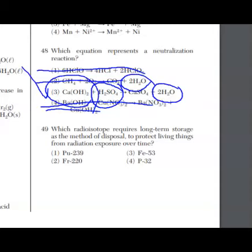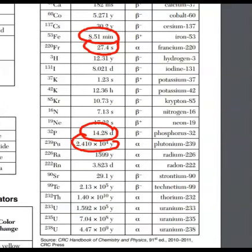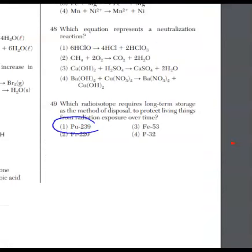For 49, which radioisotope requires long-term storage as a method of disposal to protect living things from radiation exposure over time? Another way to rephrase this is which one of these four radioisotopes has a long half-life. We don't have to guess here. All we need to do is go to the reference tables and find the half-lives for these four. You are looking at reference table N. These are selected radioisotopes, and I've circled the half-lives. Iron 53, francium 220, and phosphorus 32 are way too short when you compare it to plutonium 239 that has a half-life that is years. There's your answer. For 49, the answer is choice one.